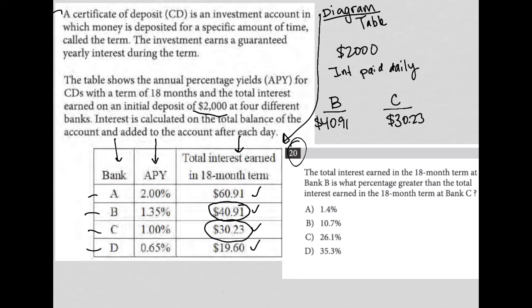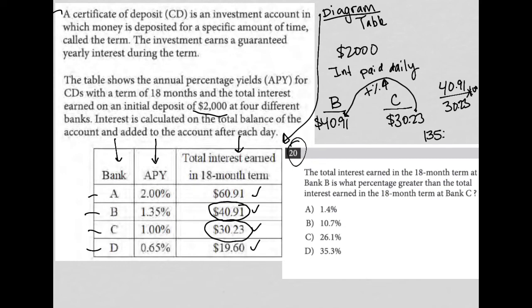The question is asking what percent greater — what is the positive percentage increase. Whenever I'm doing percent increase, I always put the larger number on top in my fraction: so 40.91 over the smaller number, 30.23, and multiply that by 100. In my calculator, I divide 40.91 by 30.23 and then multiply by 100, and what I get is 135.3%. The multiplying by 100 just converts from decimal mode into percentage mode.